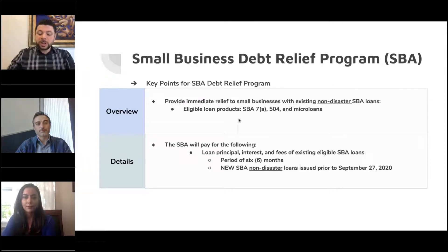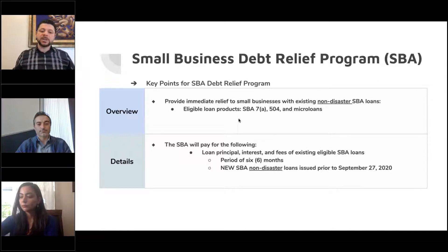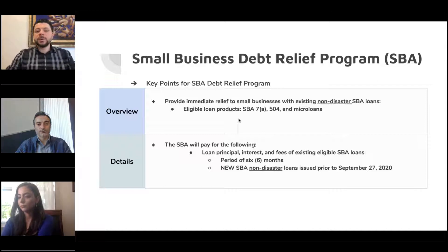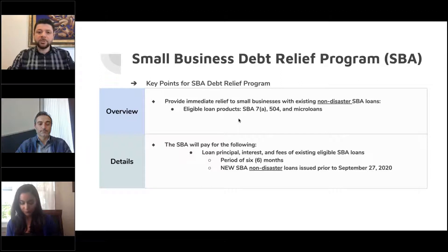The first program is the least confusing and probably the simplest of all. It does have the least amount of information and the least confusion. However, it's probably the program most businesses have not heard about yet — it's called the Small Business Debt Relief Program.